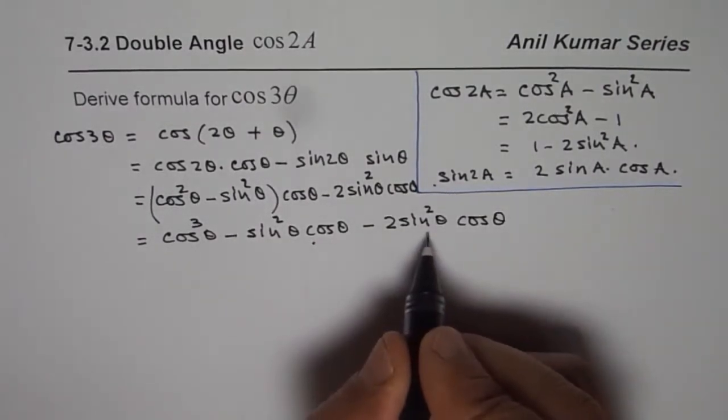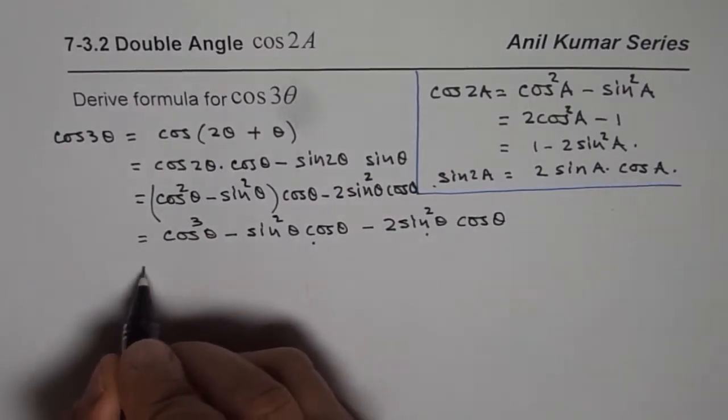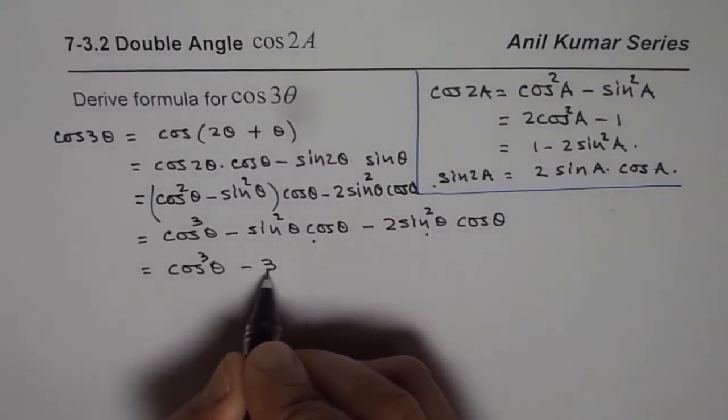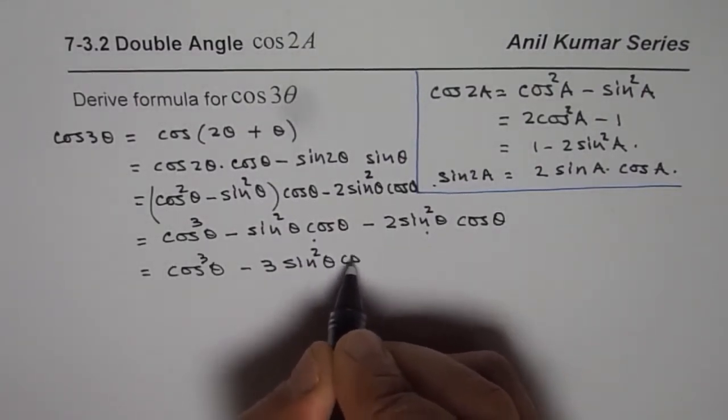Now here we can combine these terms, sine square theta cos theta. It becomes 3, so we have cos cube theta minus 3 sine square theta cos theta.